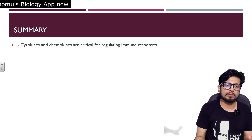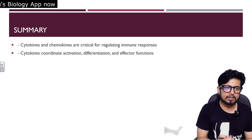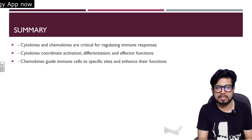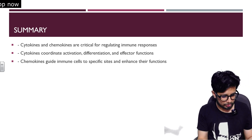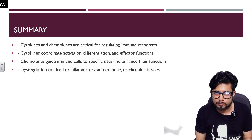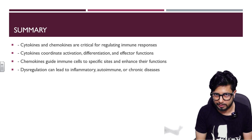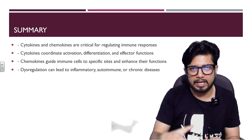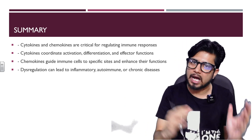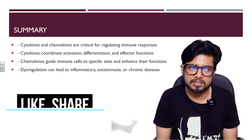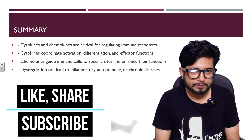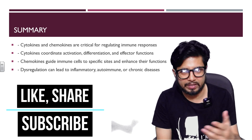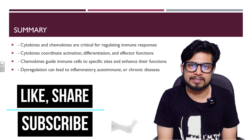In summary: cytokines and chemokines are critical for regulating immune responses. Cytokines coordinate activation, differentiation, and effector functions, while chemokines guide immune cells to specific sites and enhance their functions. Dysregulation can lead to inflammatory, autoimmune, or chronic diseases like rheumatoid arthritis. All chemokines are cytokines, but not all cytokines are chemokines. If you liked this video, please hit the like button, share with friends and colleagues, and subscribe for more videos. Thank you, bye.